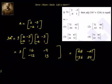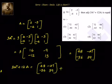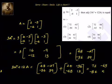Now let's add this to 12A. We'll write down 3A² plus 12A is equal to [[48, -27], [-36, 39]] plus 12 into A. So 12 into 2 = 24, 12 × (-3) = -36, 12 × (-4) = -48, 12 × 1 = 12. Let's add them: 48 + 24 = 72, -27 + (-36) = -63, -36 + (-48) = -84, and 39 + 12 = 51.